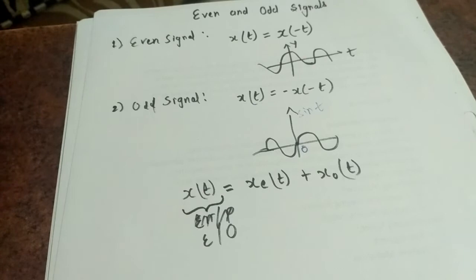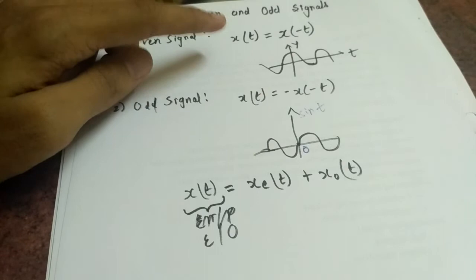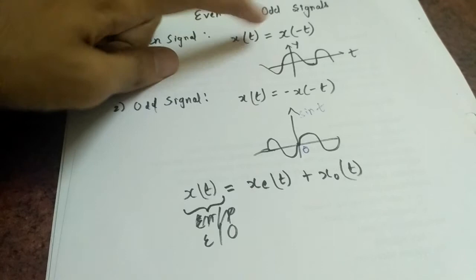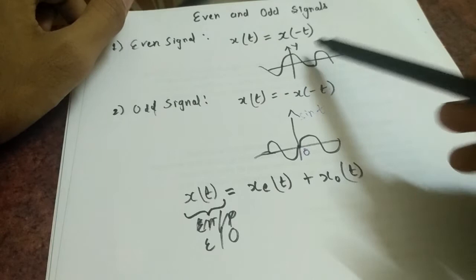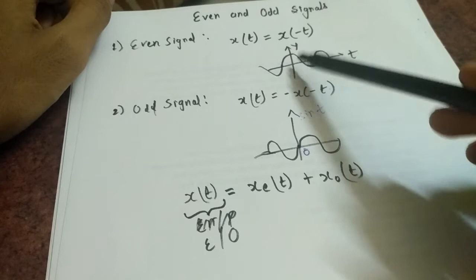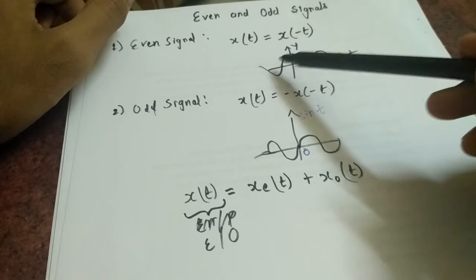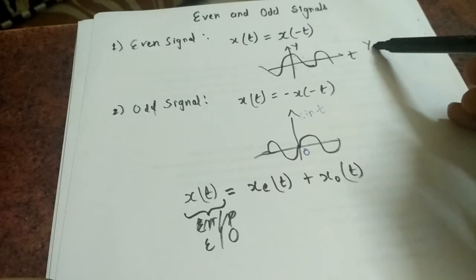Our topic is even and odd signals under the subject Signals and Systems. Even signals are those signals which satisfy the equation that if x(t) is the same as its time-reversal form, the signal is even. For example, the graph of cos(t) — if we place a mirror along the y-axis, both waveforms are the same, just mirror images. So even signals are symmetric about the y-axis.